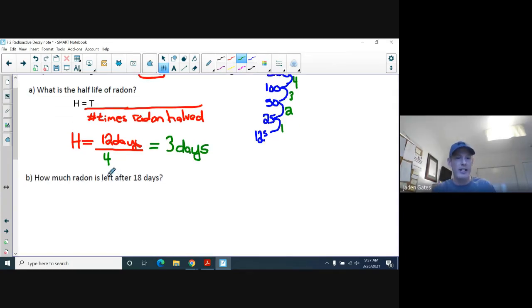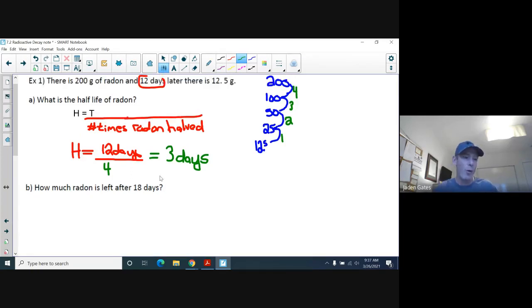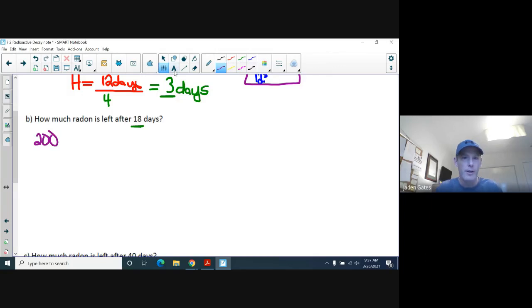Now, here's something. How much radon is left after 18 days? Now, sometimes with these questions, there is a, what I would call, a straightforward way of doing it. And sometimes, there isn't. And the way to figure that out is, is your number of days divisible by your half-life? Nicely. And can I divide 18 by three nicely? Yeah, I can. Because 18 divided by three is six. So, what I can do is, I take what my information that I have over here, that I figured out the number of times, and I keep going.